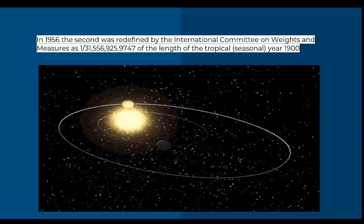In 1956, the second was redefined by the International Committee on Weights and Measures as 1/31,556,925.9747 of the length of the tropical year 1900.